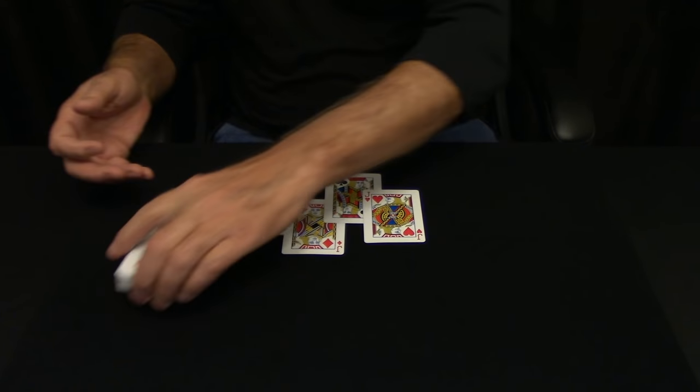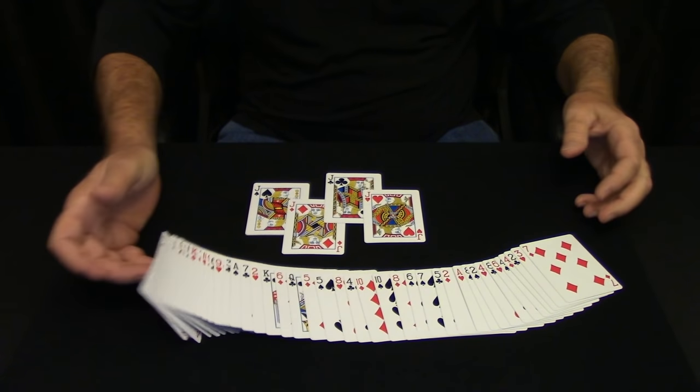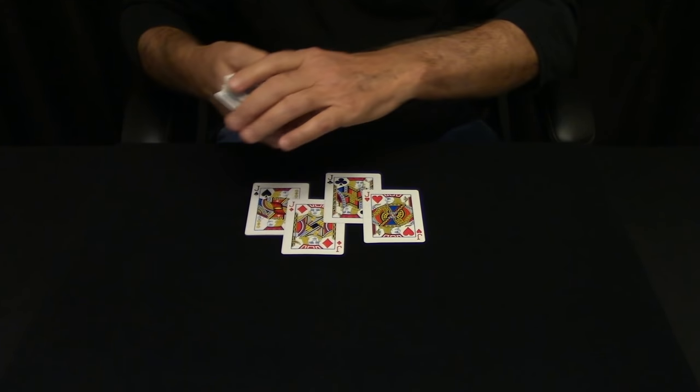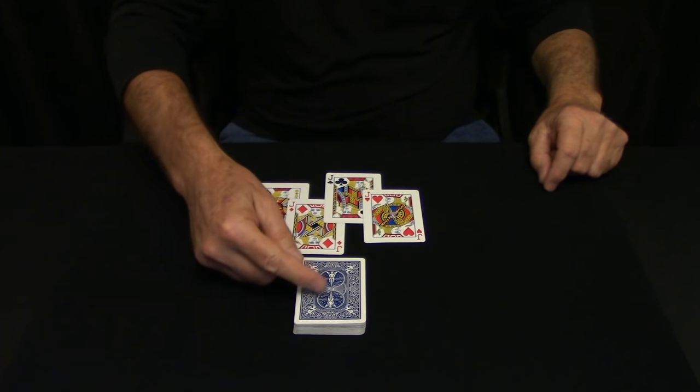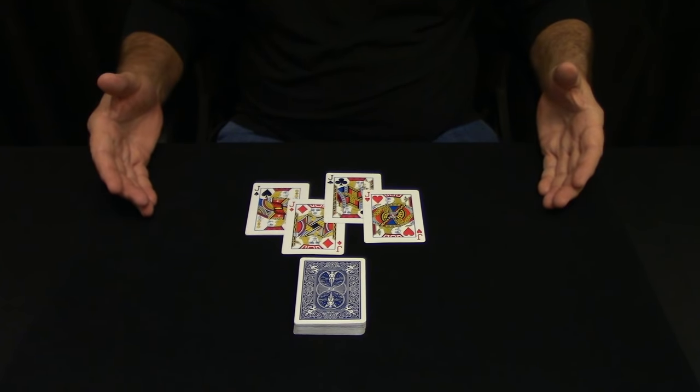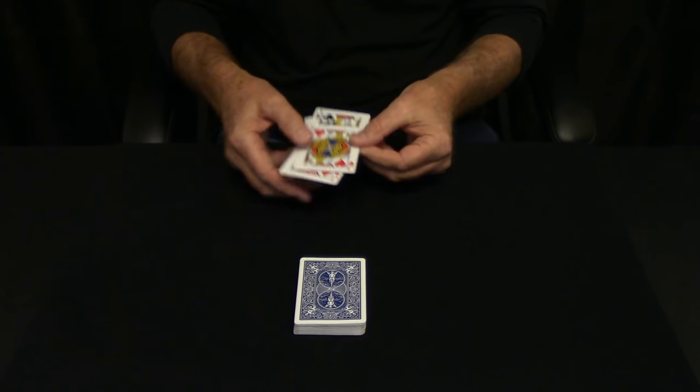Did you know that cards can be a bank full of money? Yeah, neither did I, but check this out. This is the bank, these are the helicopter landing pads on the roof, and the four jacks are the bank robbers.